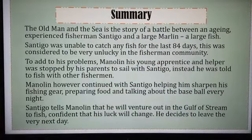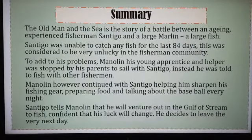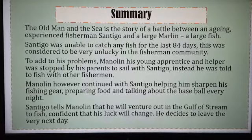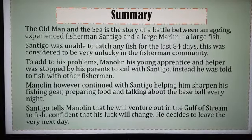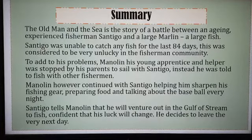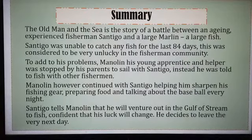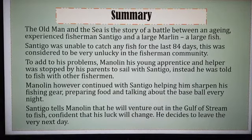The novel, The Old Man and the Sea — the story is told in simple words but with a deep meaning. It is a story of a battle between an aging, experienced fisherman, Santiago, and a large Marlin, a large fish. Santiago was unable to catch any fish for the last 84 days, which was considered very unlucky in the fisherman community. His young apprentice and helper, Manolin, was stopped by his parents from sailing with Santiago and was told to fish with other fishermen instead.